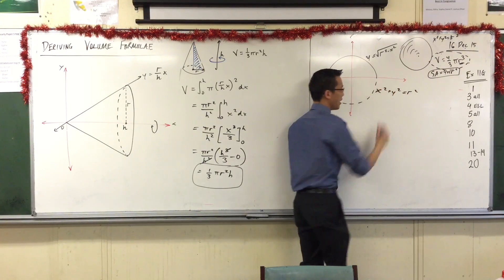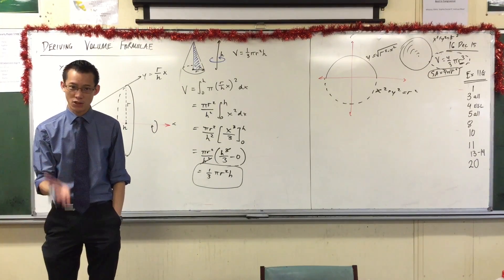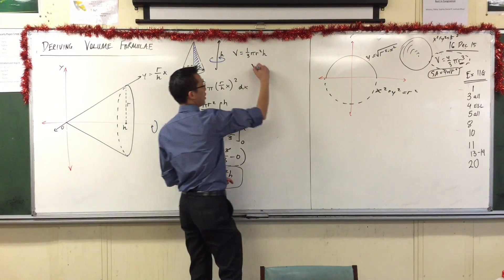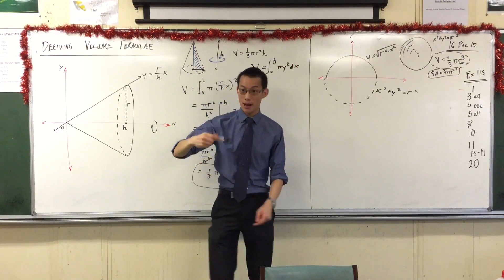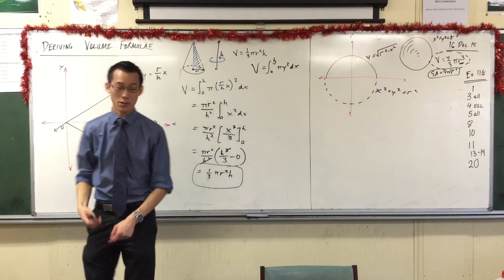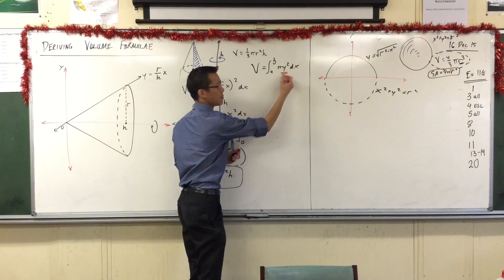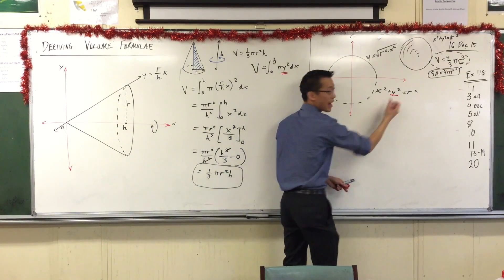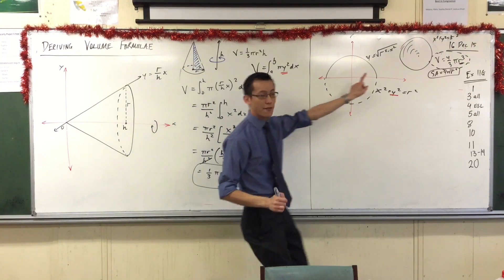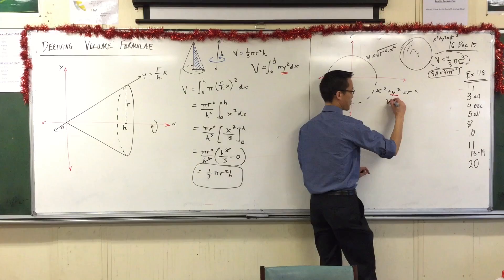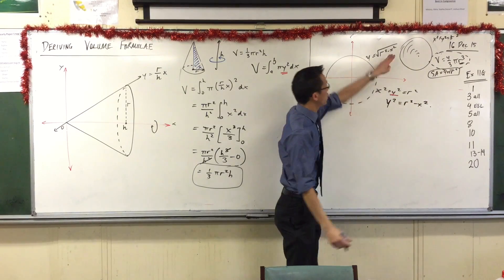Now, this actually ends up being very useful to us because in order to get a volume, right? In order to get a volume, our formula is from a to b of pi y squared dx because I'm choosing to rotate it around the x-axis, right? Hold on. Y squared? Pi y squared? I have a y squared. Right there. No taking square roots or anything required, right?